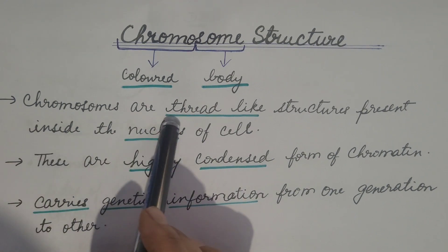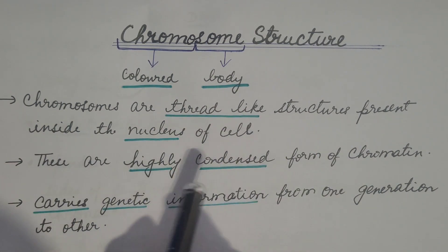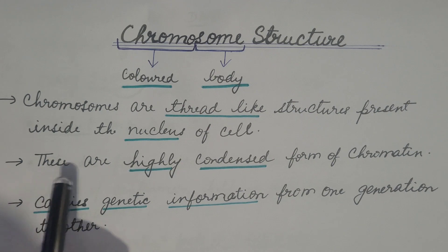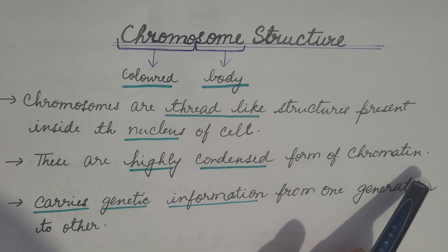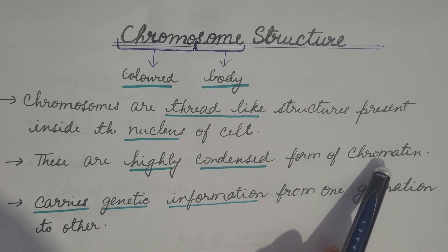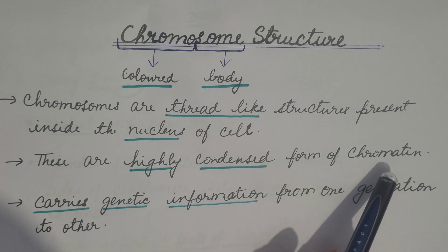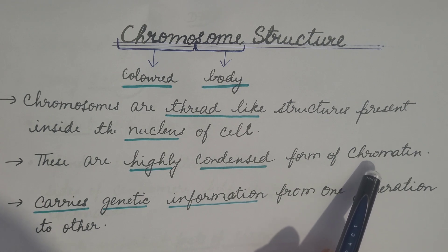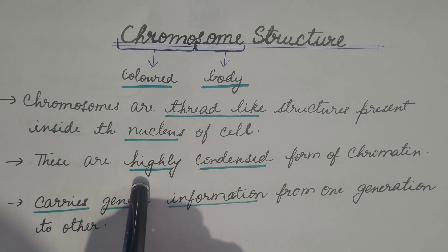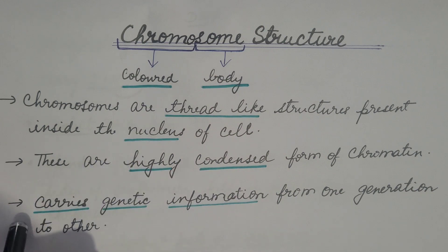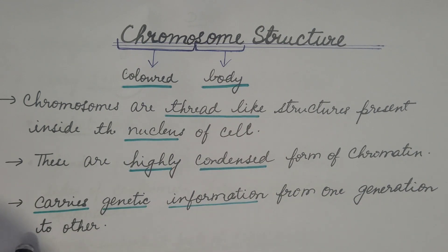Chromosomes are thread-like structures present inside the nucleus of a cell. These are the highly condensed form of chromatin. In the previous video we discussed that chromatin is a nucleoprotein which consists of DNA plus histone proteins. When chromatin condenses, it is known as chromosome. These chromosomes carry genetic information from one generation to the next — from parent to offspring.